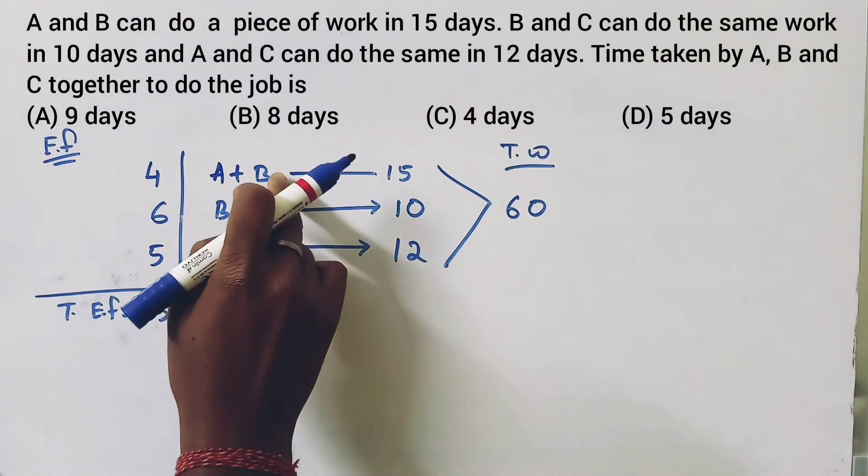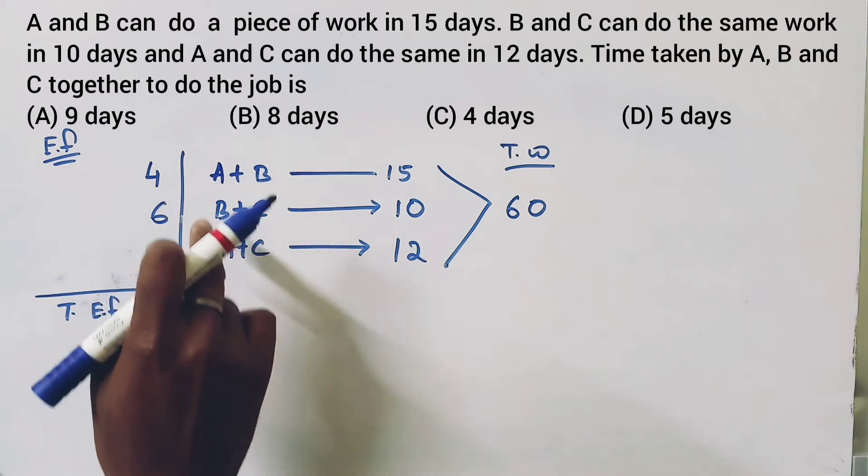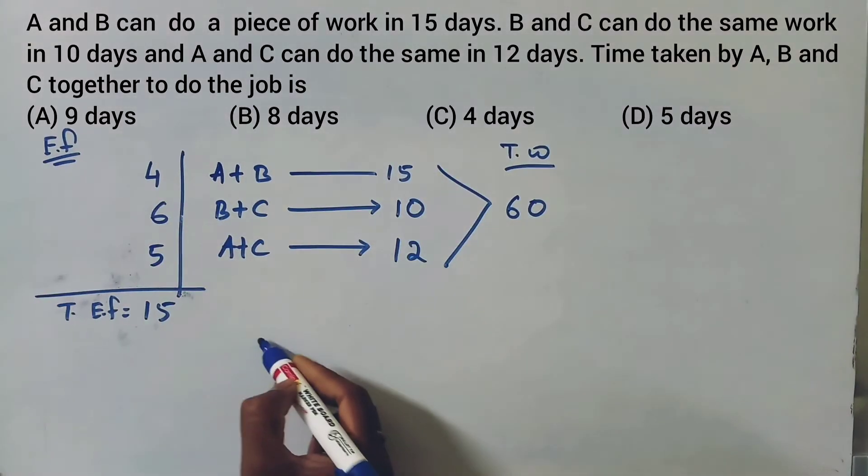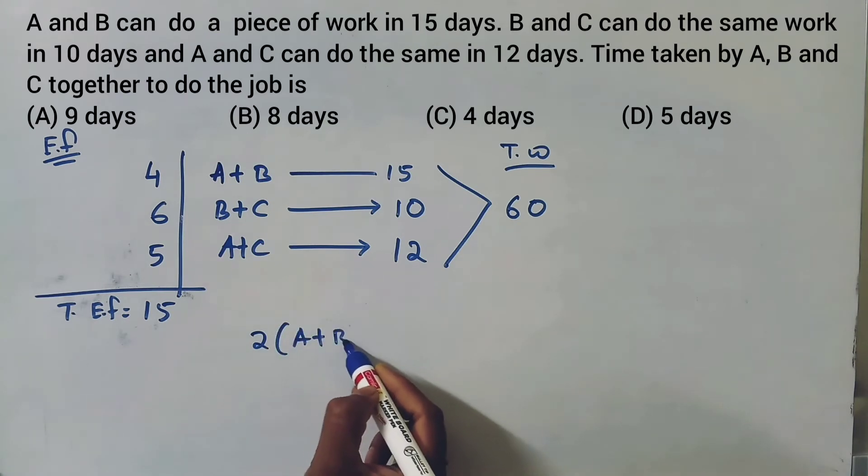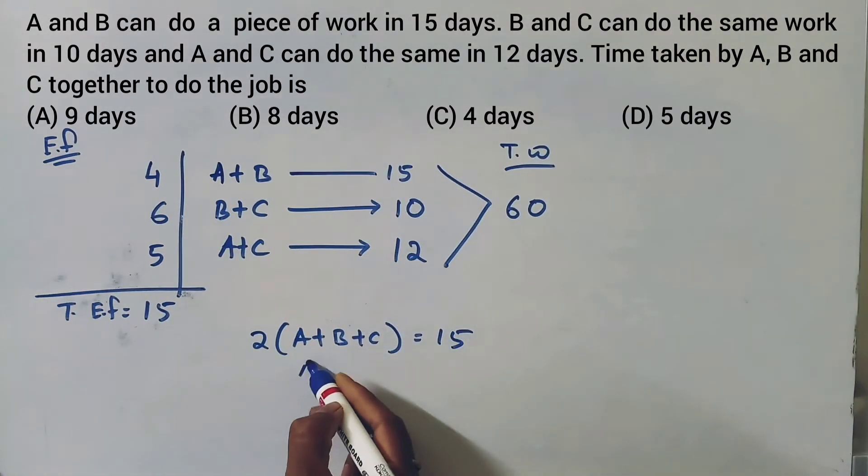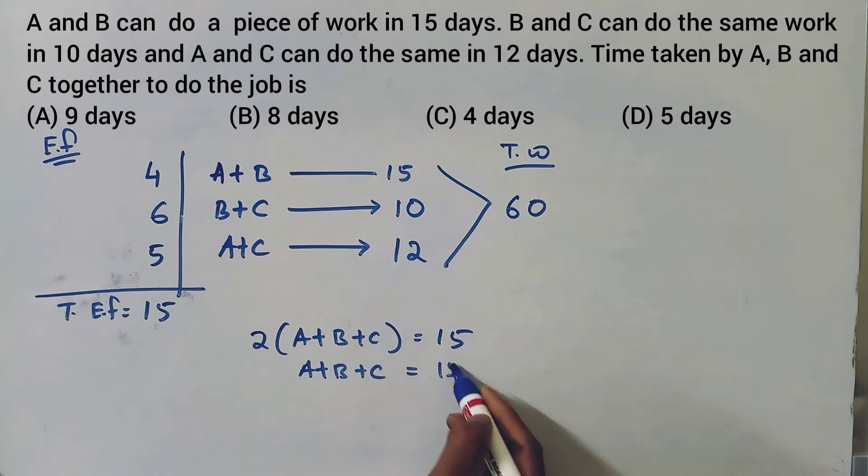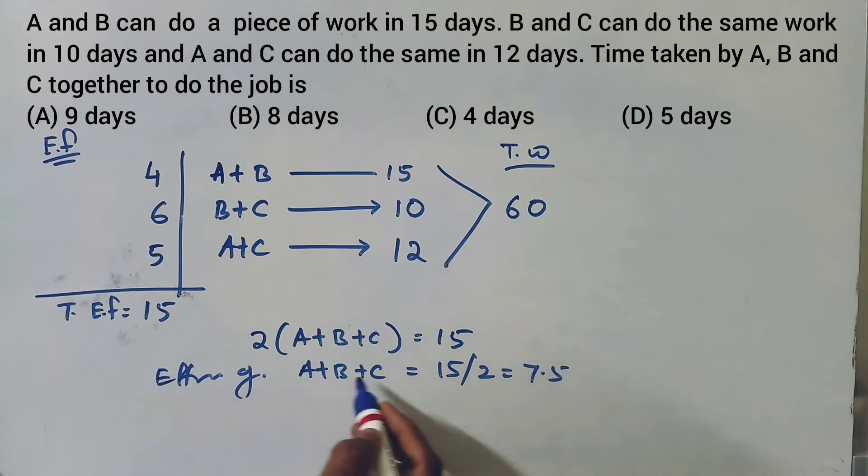We will find efficiency of A, efficiency of B, and efficiency of C. So we can see that 2 times A plus B plus C equals 15. So we can see that A plus B plus C equals 5 by 2, which equals 7.5. So efficiency of A plus B plus C is 7.5.